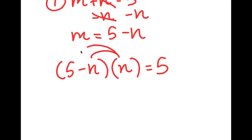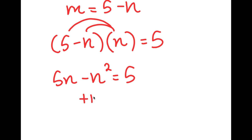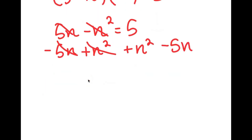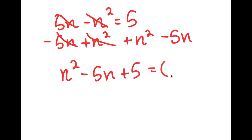Now I can distribute the n. So 5 times n is going to be 5n, and negative n times n is going to be negative n squared. This is equal to 5, and now I can add n squared on both sides and subtract 5n on both sides. And I get n squared minus 5n plus 5 is equal to 0.